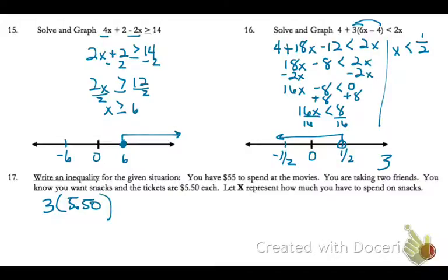You want to buy snacks, and x is going to represent how much you can spend on snacks. So besides the cost of the tickets, you'll have the cost of the snacks, and that can't go over your $55. So it has to be less than or equal to $55.